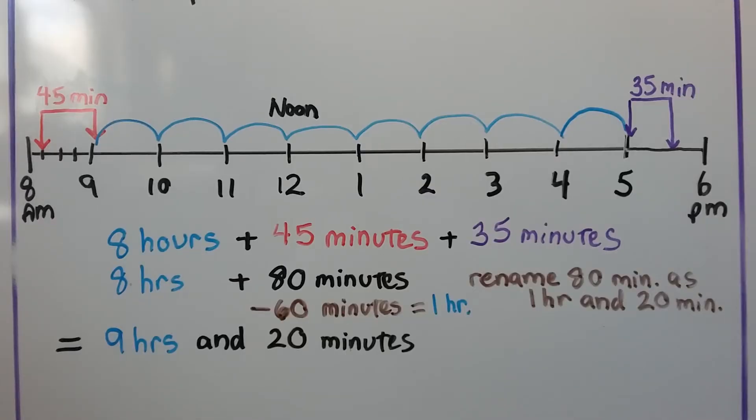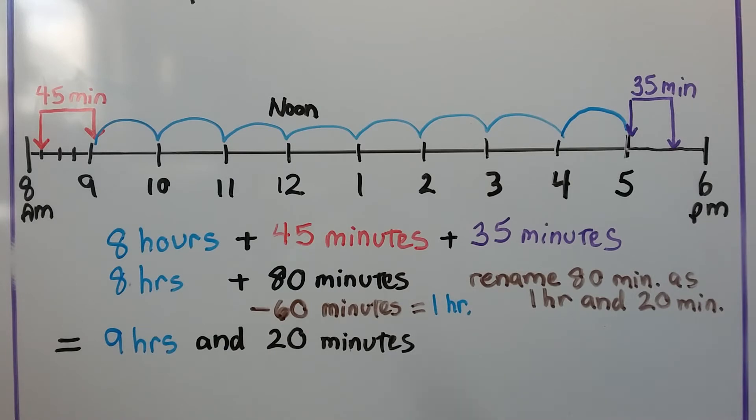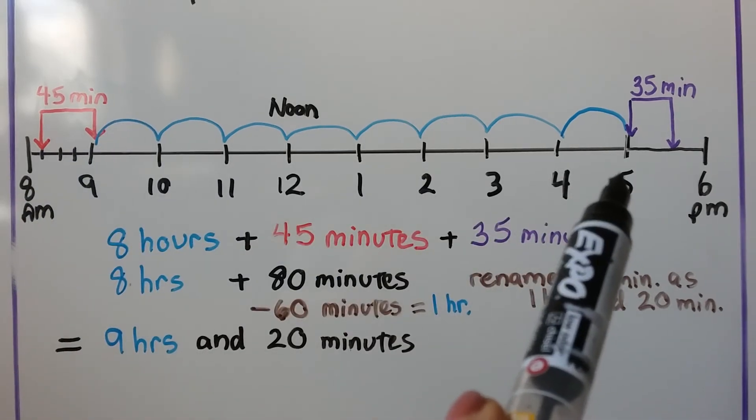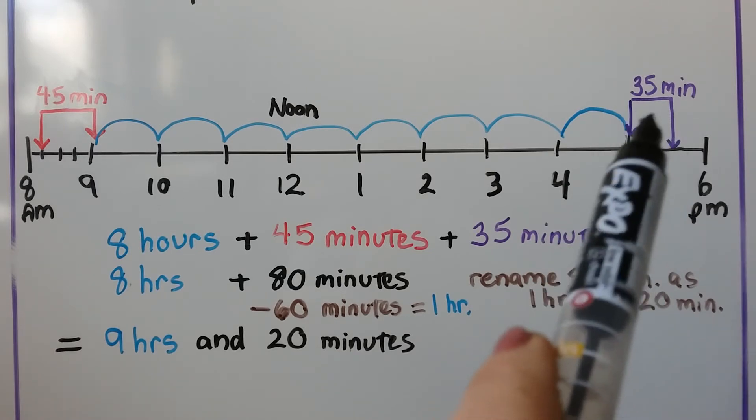Now we can also make a number line going from 8 a.m. because she started at 8:15, going to 6 p.m., that's a little bit after 5:35 p.m. And we can count how many minutes are from 8:15 a.m. to 9 a.m. That would be 45 minutes. Then we can count the hours from 9 to 5 p.m. and she got out at 5:35 p.m. so there's 35 minutes here.